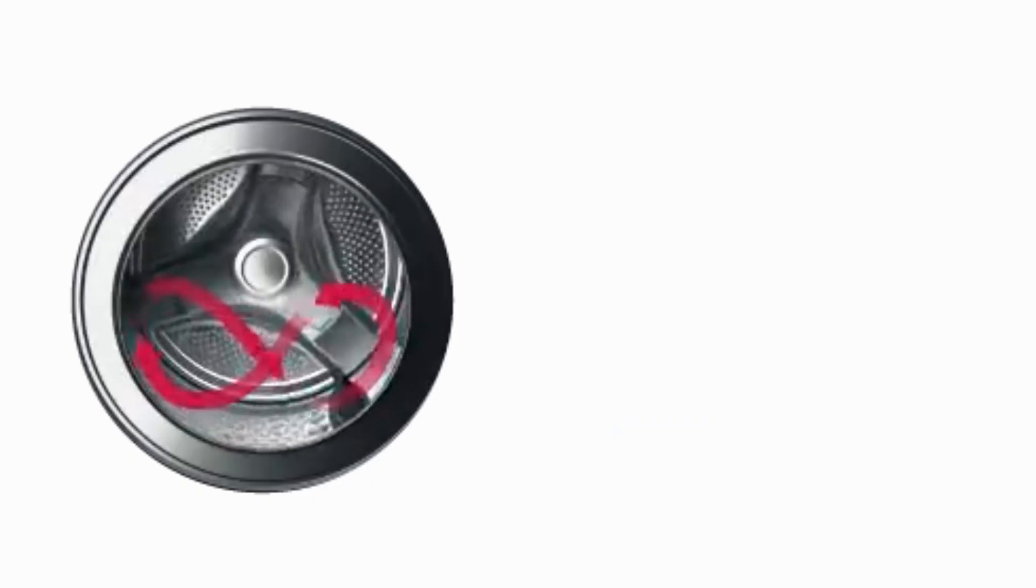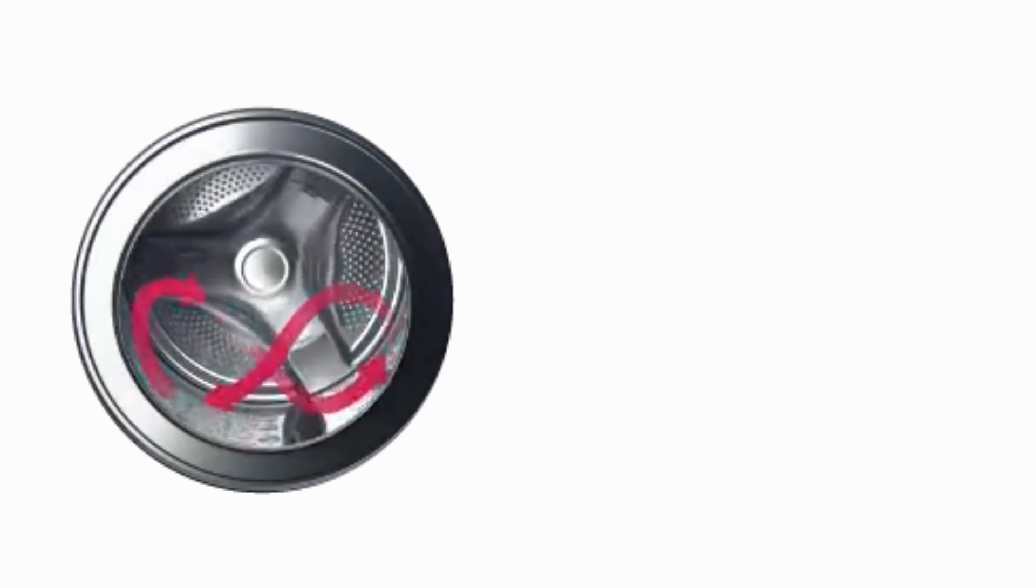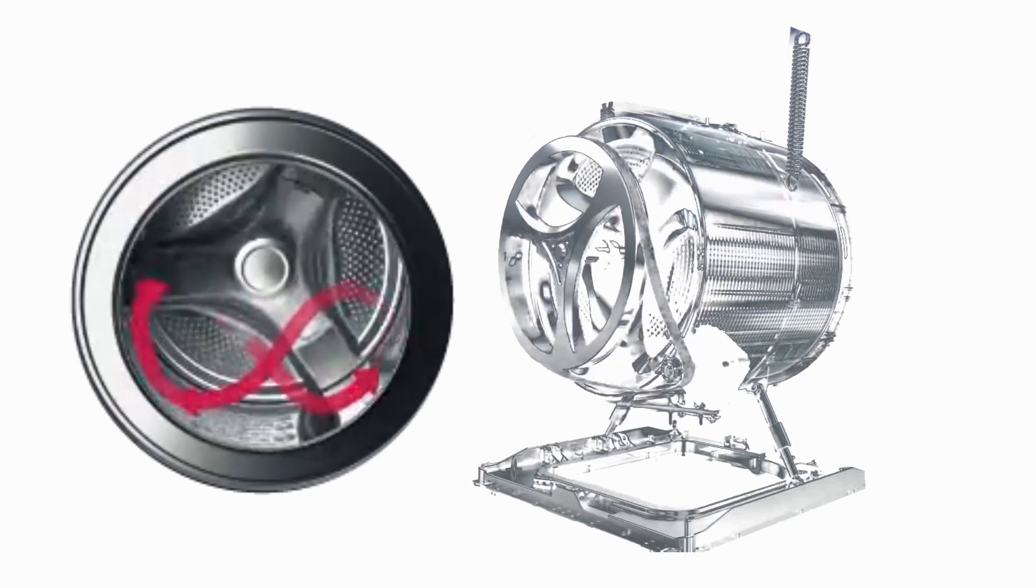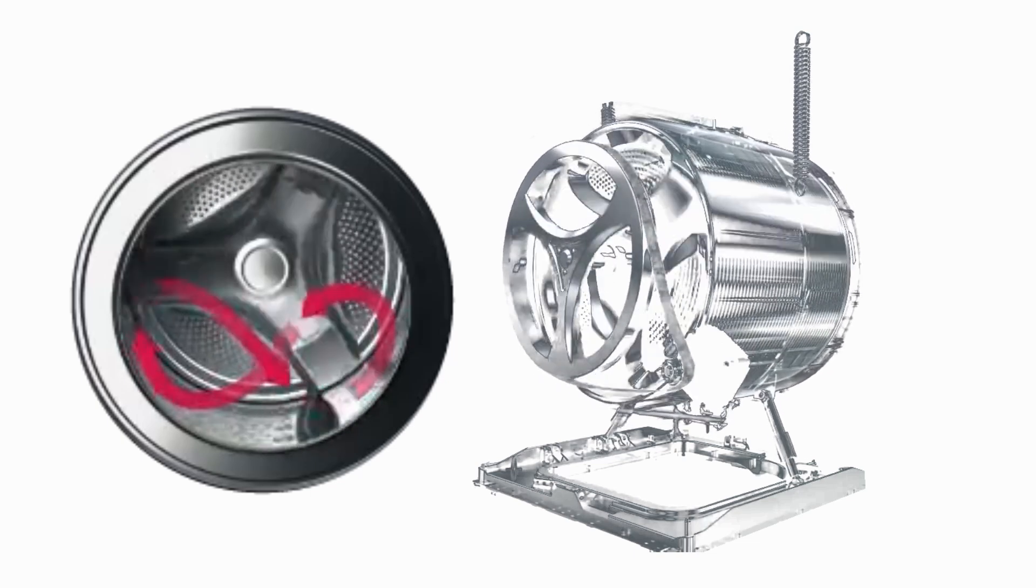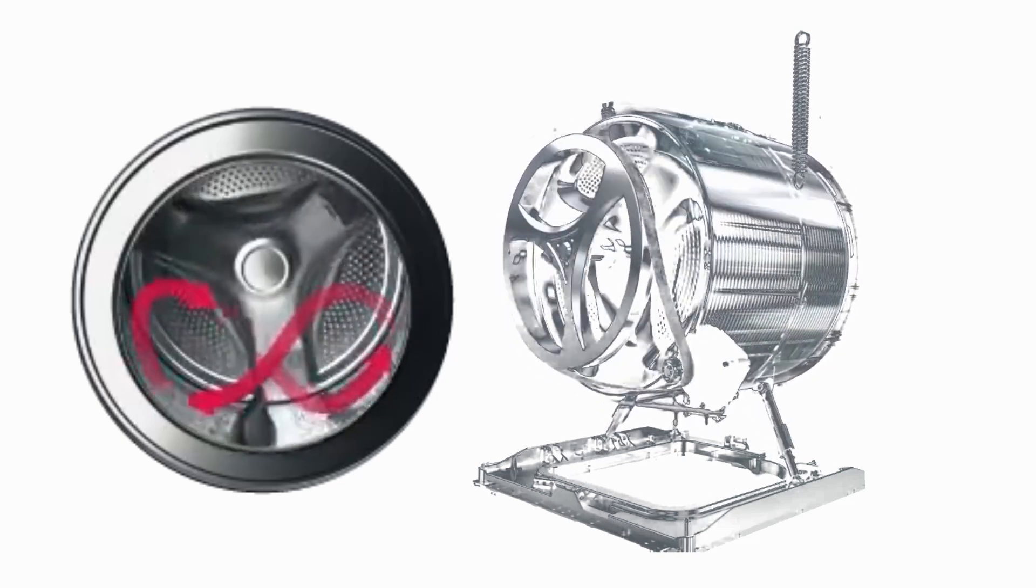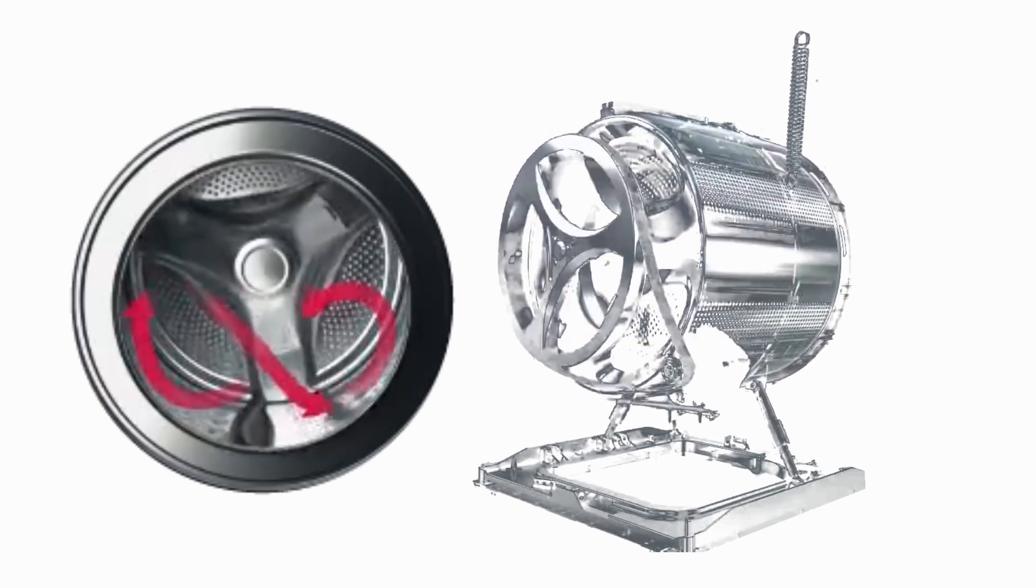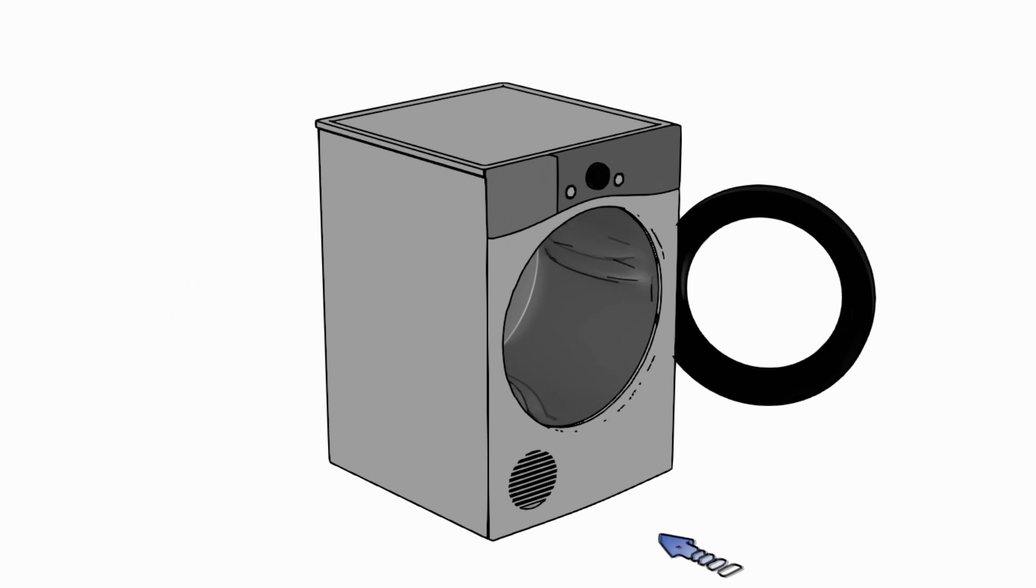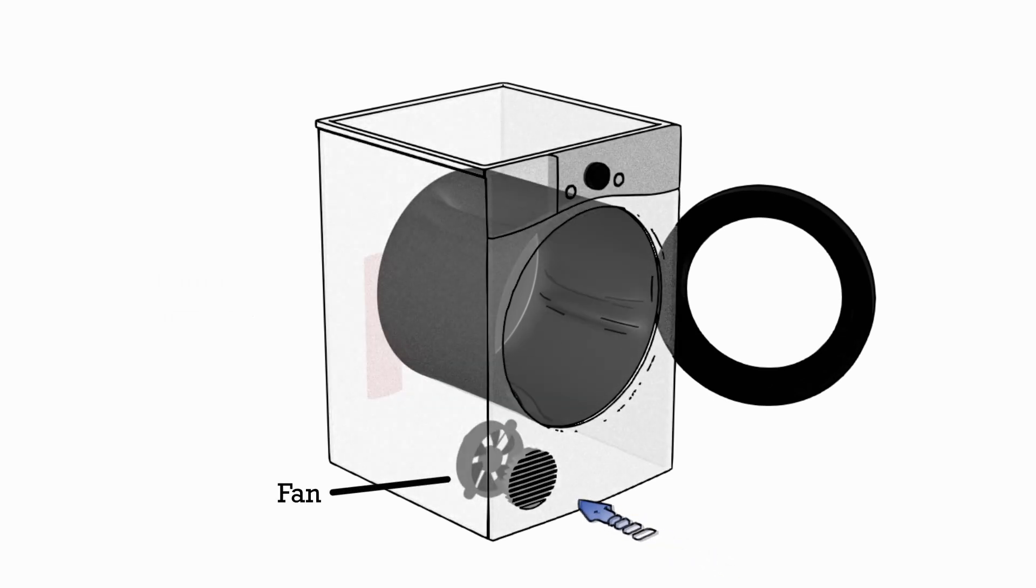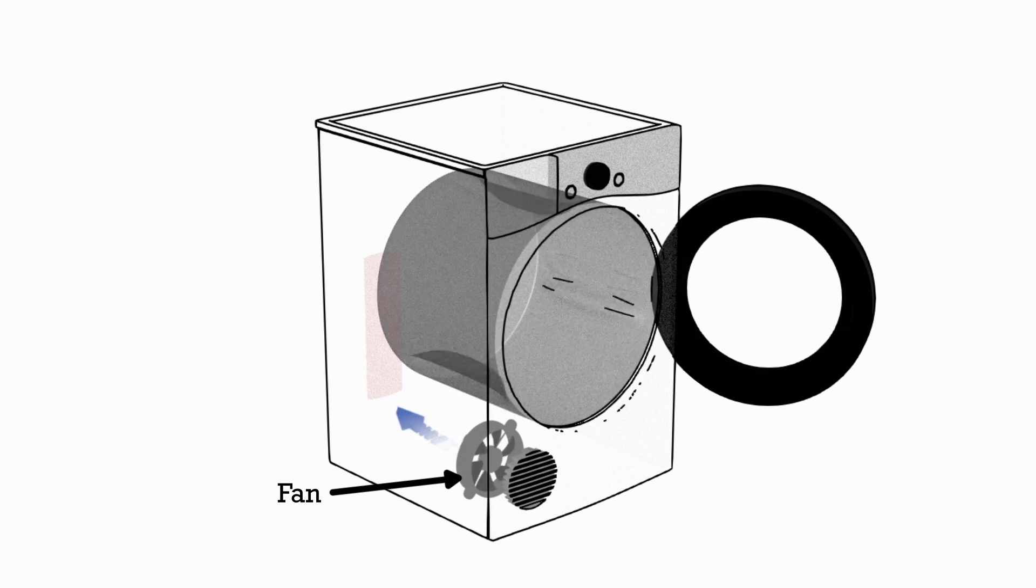The drum can spin forwards and backwards to prevent the clothes from tangling. Counterweights, springs and hydraulic dampers are also used to eliminate excessive vibration caused by unbalanced loads. The motor is also used to spin a fan, which draws in air from the surroundings in a similar way to that which we discussed in the previous video on how vacuums work.